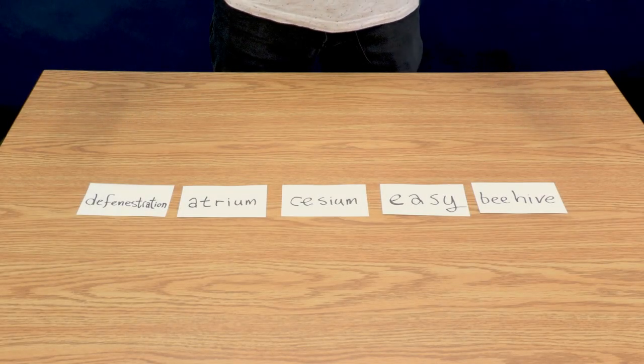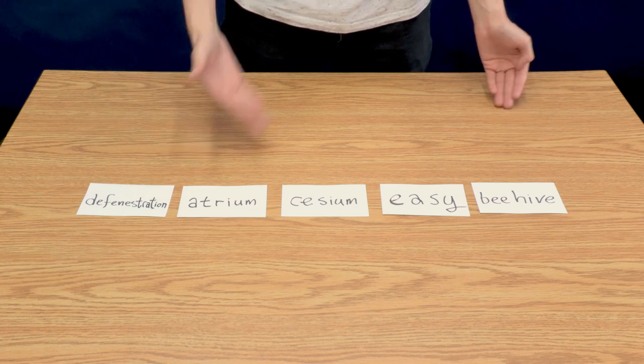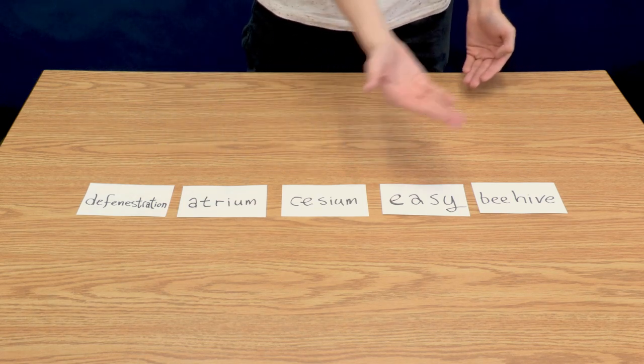Here I have these five words: defenestration, atrium, cesium, easy, and beehive.